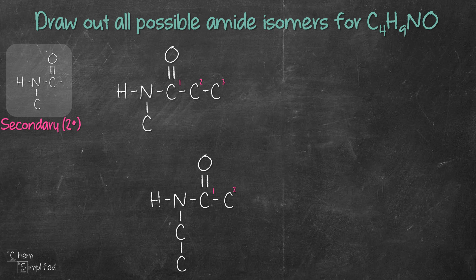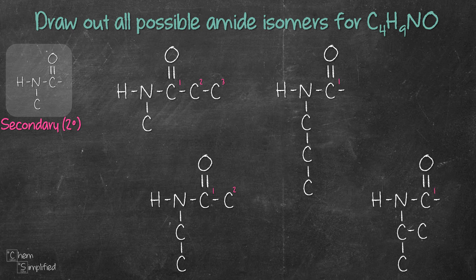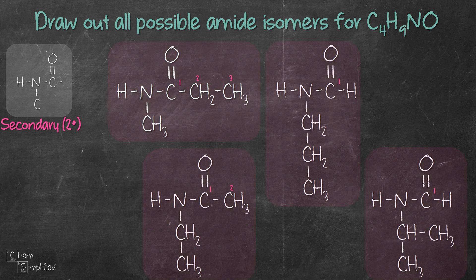We can continue shortening the chain further to get a one carbon chain secondary amide. From that structure, we can shorten the carbon chain on the nitrogen to look like this. That will give us another isomer. Filling up the carbons with hydrogens will give us these structures.